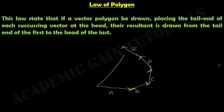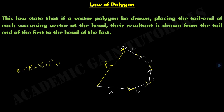That will give us the resultant vector. So R will be the vector of A plus vector of B plus vector of C plus vector of D plus vector of E.